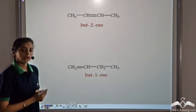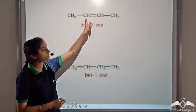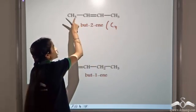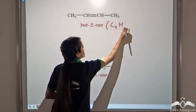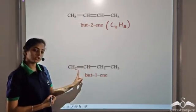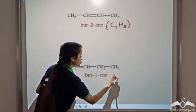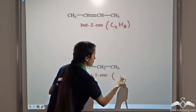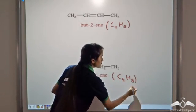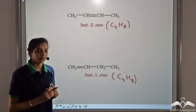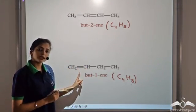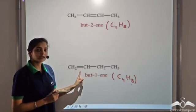Let's look at another example. We have but-2-ene, since the double bond is present at carbon number 2. The molecular formula is C4H8. When we shift the double bond to position 1, we get but-1-ene. Counting again, we still have 4 carbon atoms and 8 hydrogen atoms, so the molecular formula is C4H8 in both cases. But there is a difference in the position of the functional group — in this case the functional group is the double bond — there is a difference in the position of the double bond.